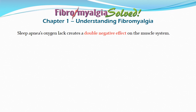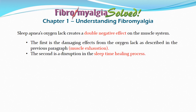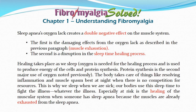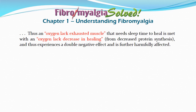Sleep apnea's oxygen lack creates a double negative effect on the muscle system. The first is the damaging effects from oxygen lack — muscle exhaustion. The second is the disruption in the sleep-time healing process. Healing takes place when we sleep, and oxygen is needed for healing by providing energy to cells and enabling protein synthesis. The body resolves inflammation and muscle spasms best at night when there's no competition for resources. This is why we sleep when we're sick. With sleep apnea, an oxygen-exhausted muscle that needs sleep-time healing is met with decreased healing from reduced protein synthesis — a double negative effect.